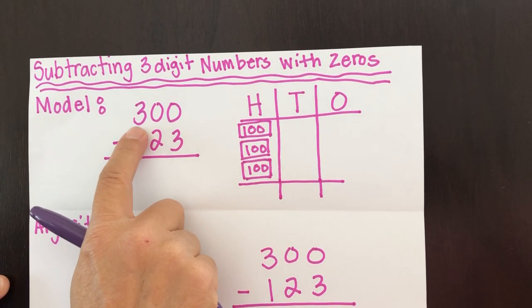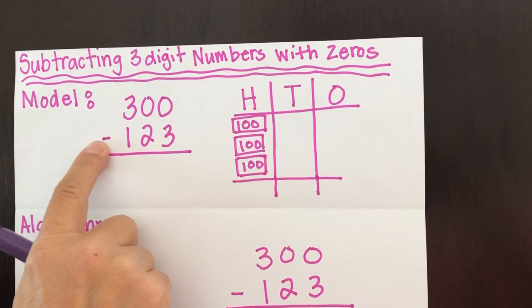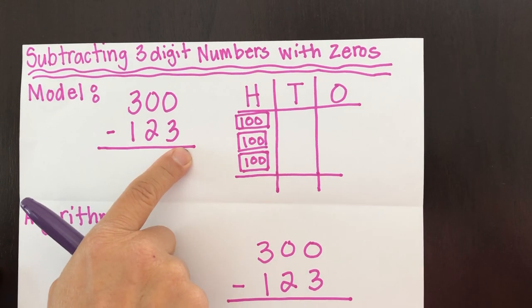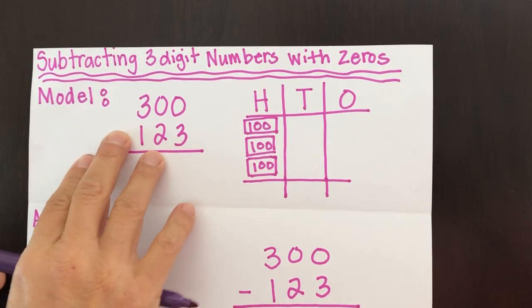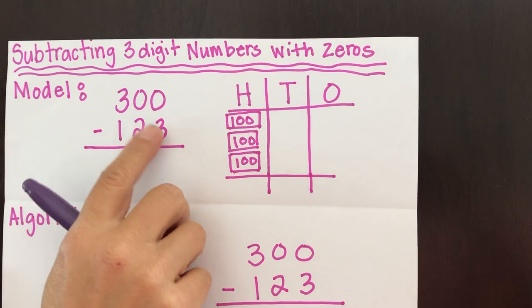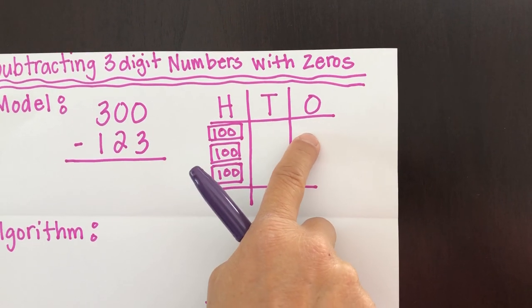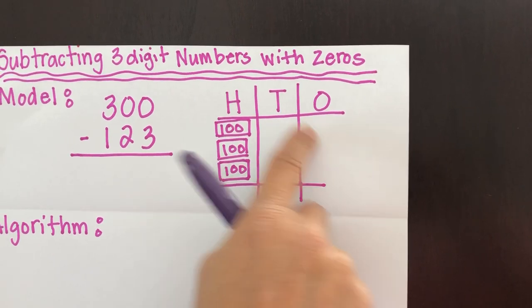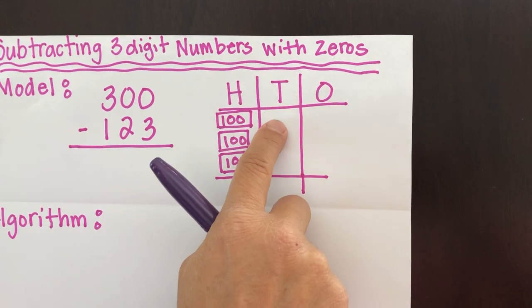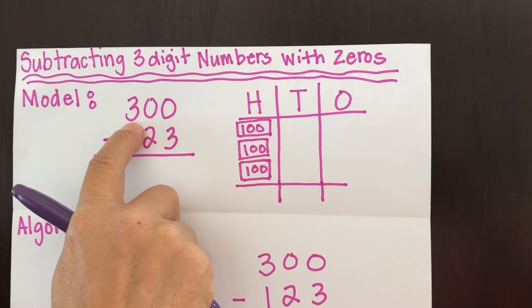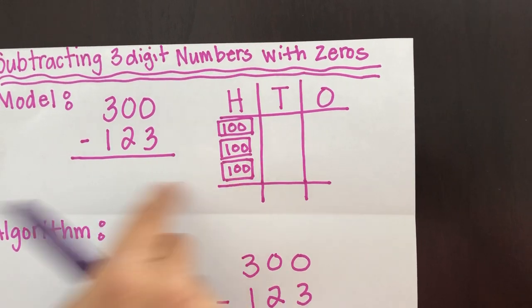So if you look at our problem, it says 300 minus 123. So what I'm going to do is I'm going to draw this on my model. And as you can see, I already did. So there's no ones. There are zero tens, but it says 300. So I drew our 300s.